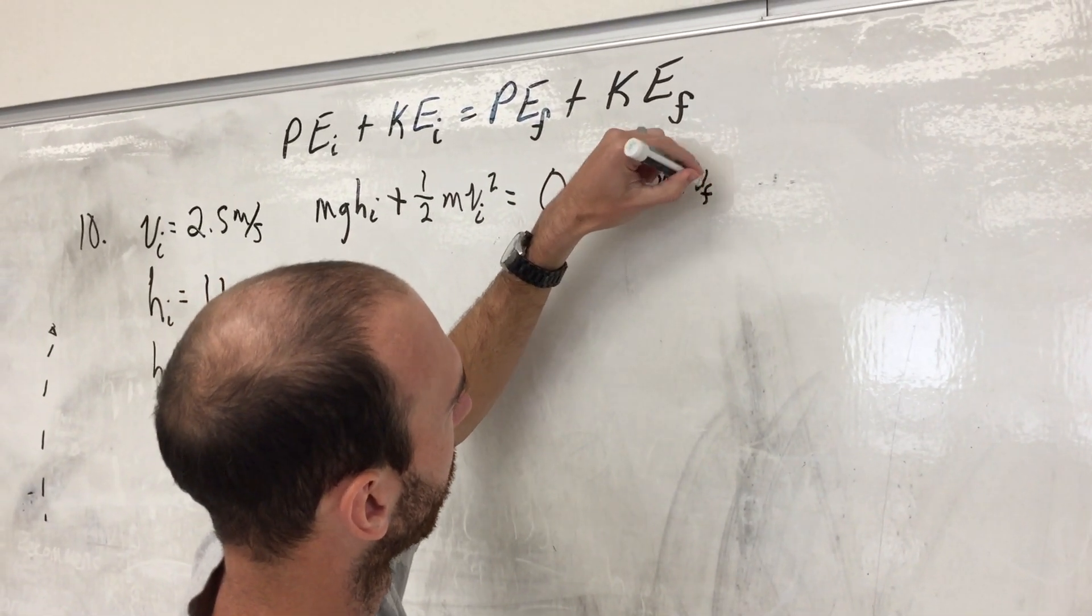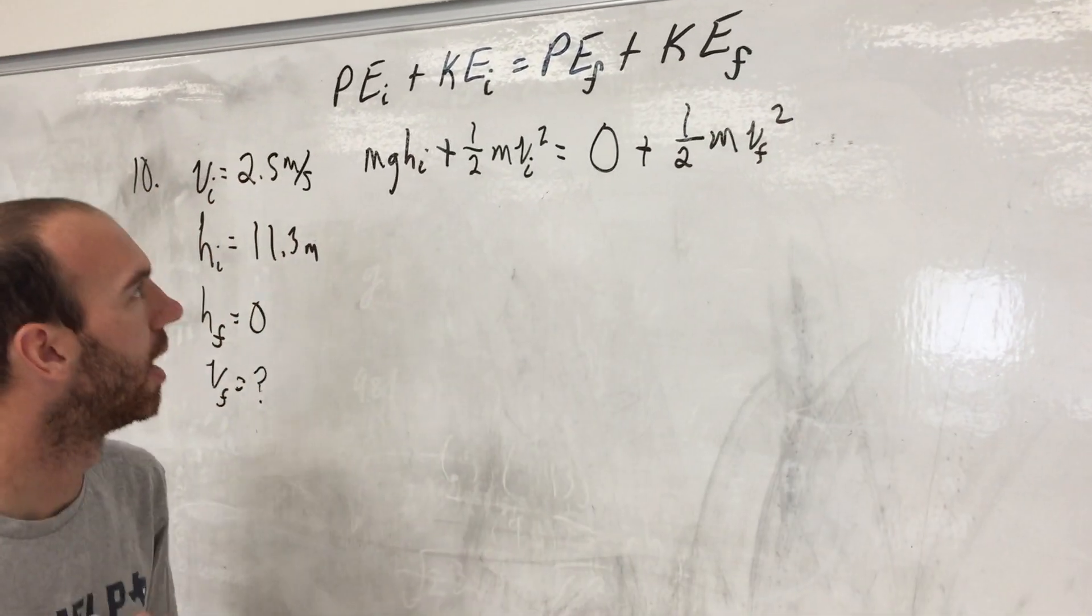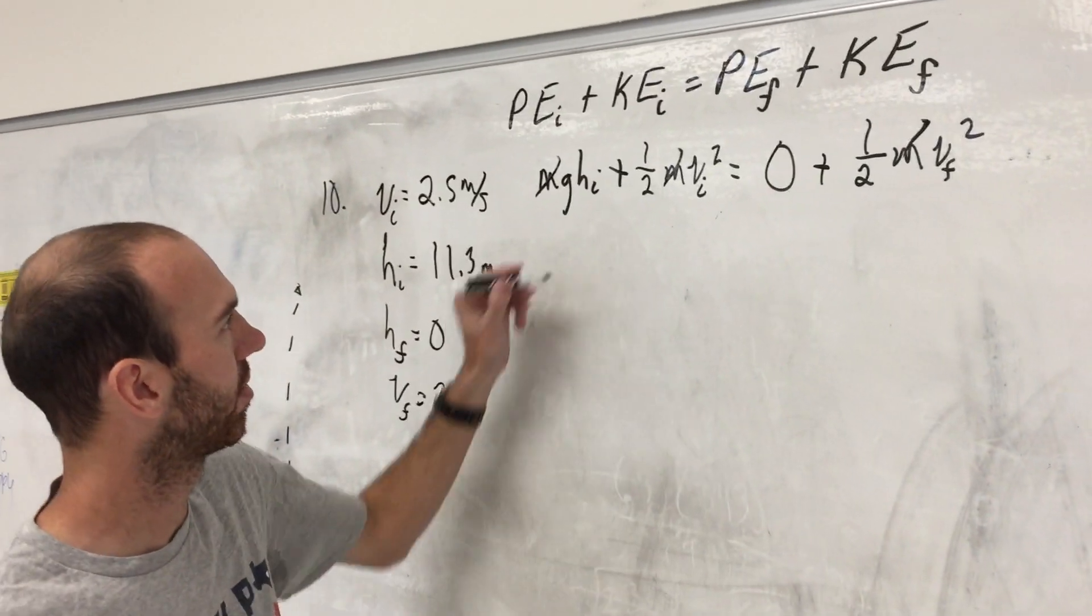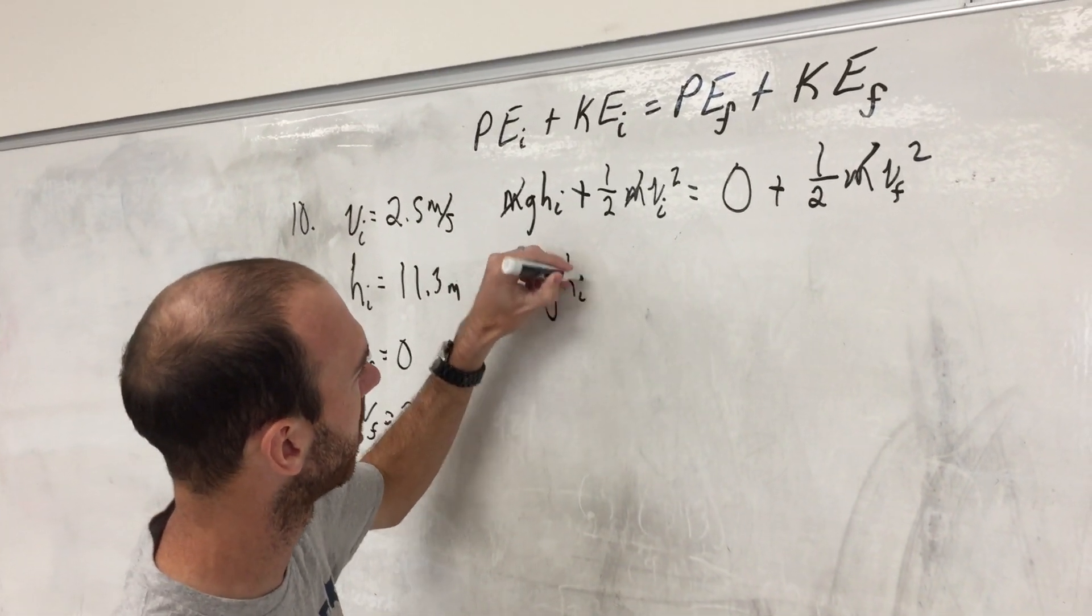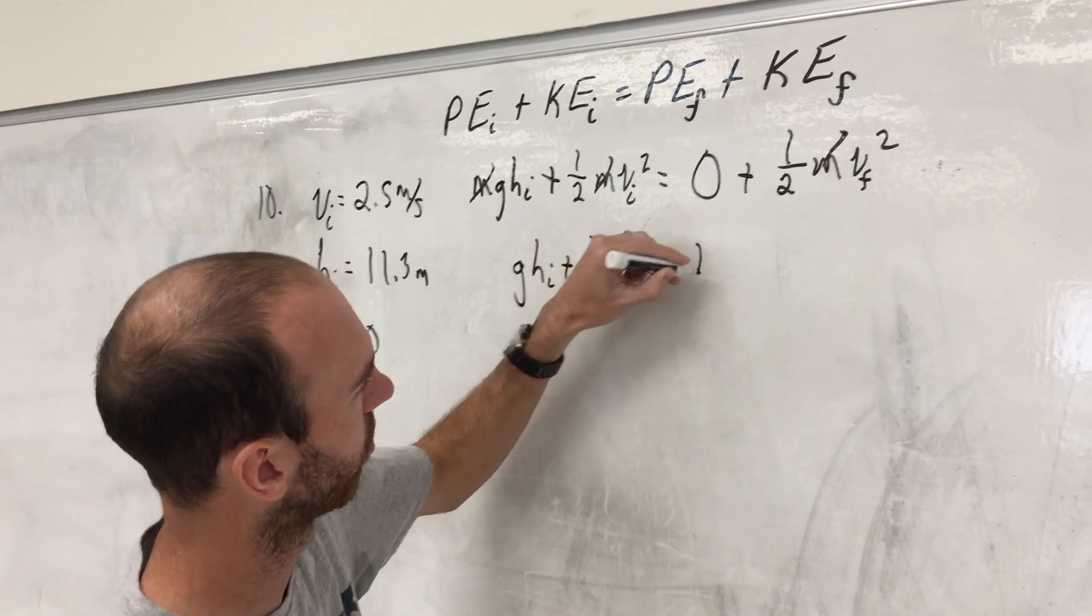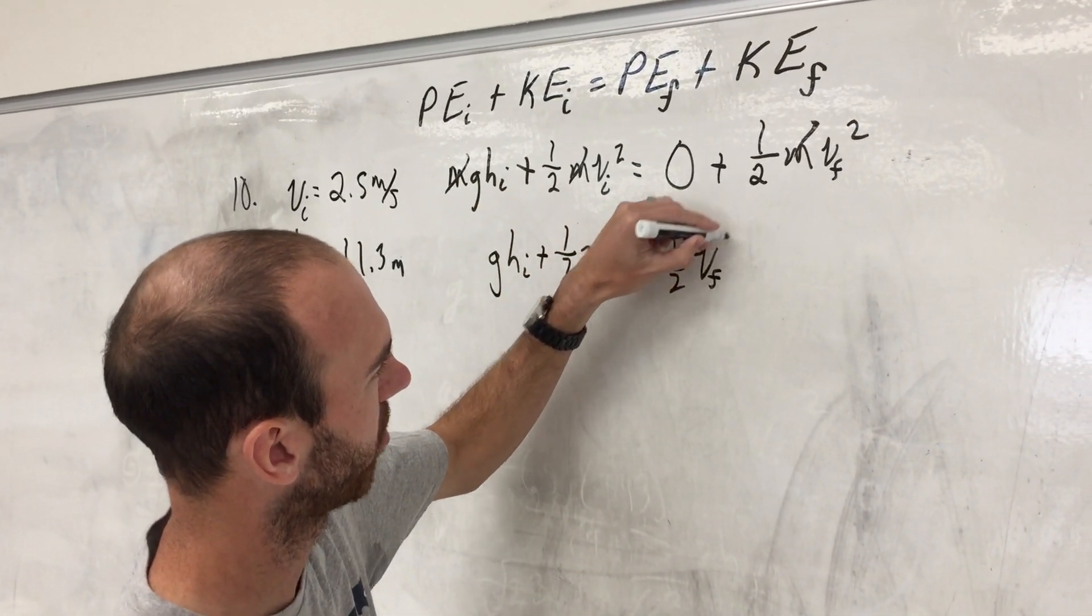As always, mass cancels, we can divide each term by the mass. So we're left with g h initial plus one half the initial velocity squared equals one half the final velocity squared.